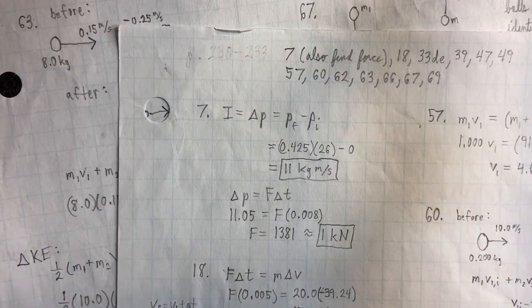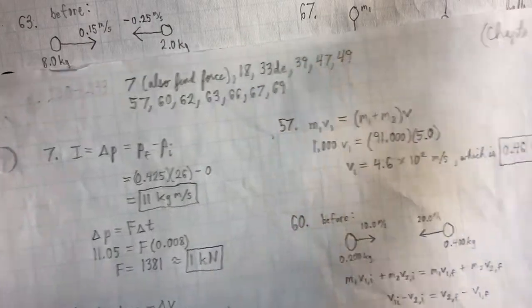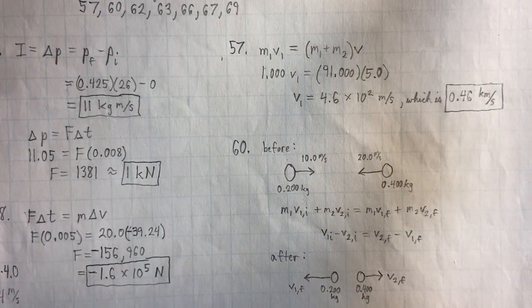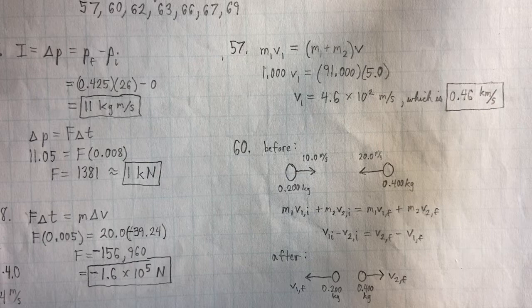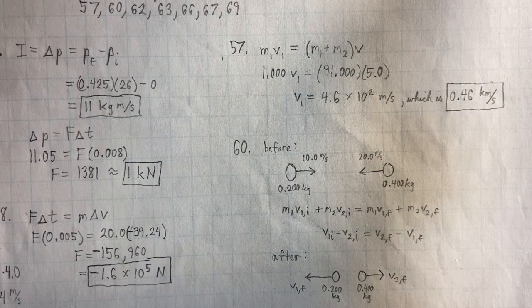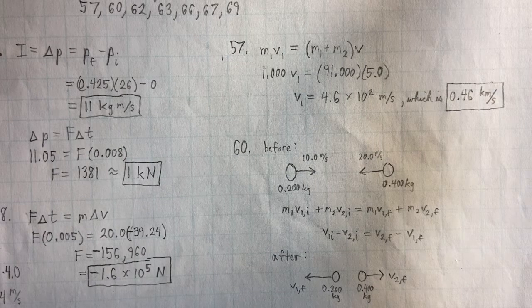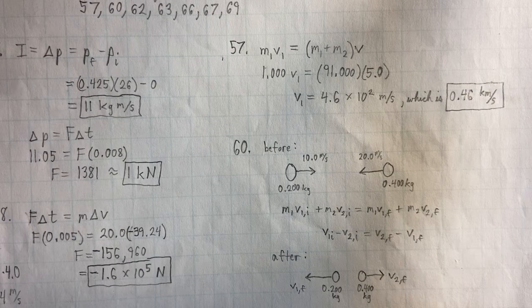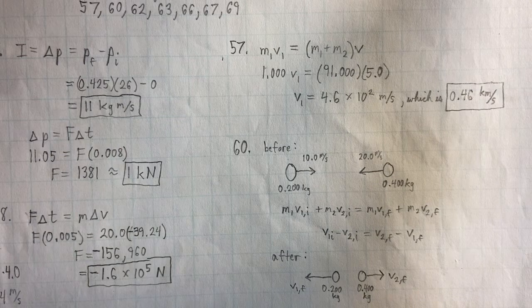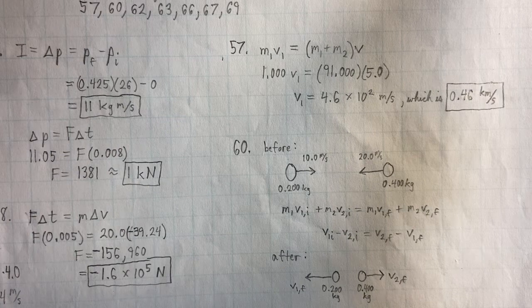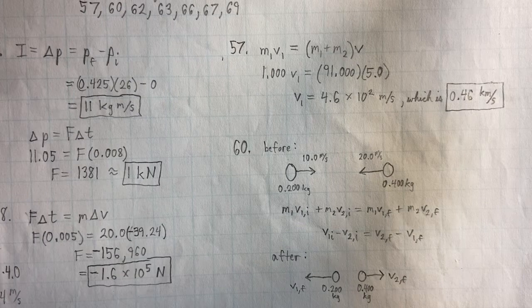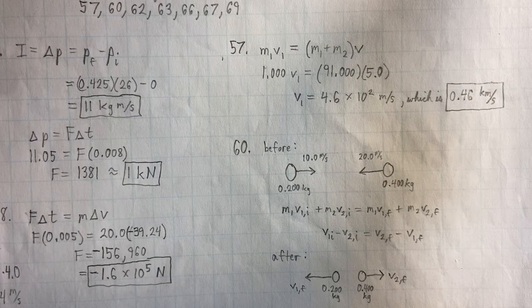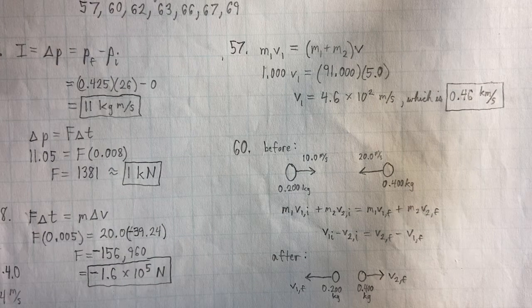Okay, going on then to number 57. So M1V1 equals M1 plus M2 times V because what we have here is an inelastic collision. That's why we have to combine the masses there, M1 plus M2. And then when we plug in our givens, we end up with V1 being 4.6 times 10 to the second meters per second or 0.46 kilometers per second.